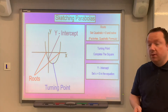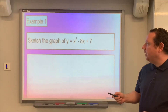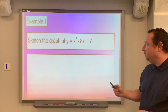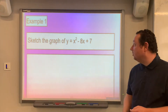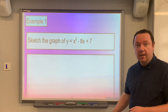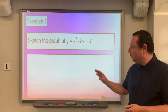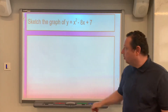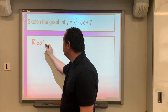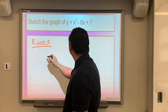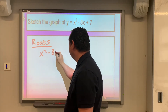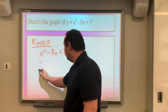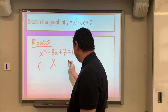Let's look at a few examples of sketching parabolas, going from easy to hard. Example one: sketch the graph of y equals x squared minus 8x plus 7. This will be a typical National Five example, but you could get asked to do this in Higher. Let's start with finding the roots — we set it equal to zero: x squared minus 8x plus 7 equals zero. This one can be factorised.